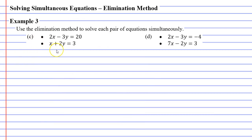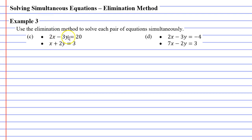Looking at question C, we're faced with an issue. It doesn't matter whether I add or subtract — I'm not going to eliminate either pronumeral. I need the x's or y's to have the same coefficient. The x's have coefficients of 2 and 1, which aren't the same. The y's have coefficients of negative 3 and 2. Whether negative or positive, the numbers need to match — both y's need a 3, or both x's need a 2.